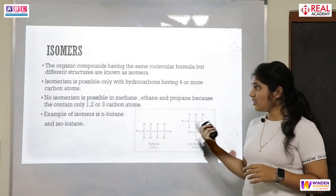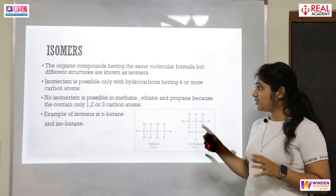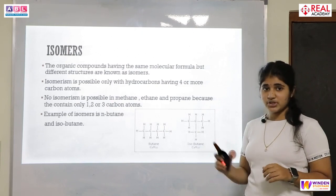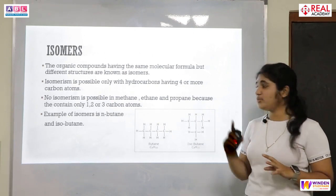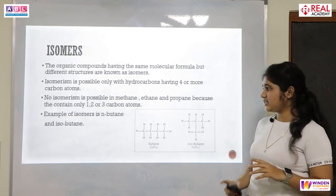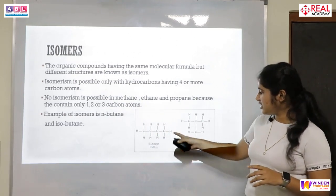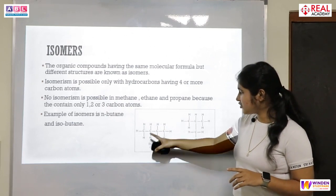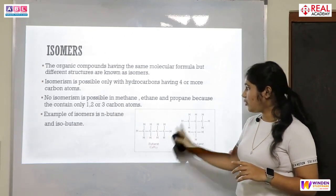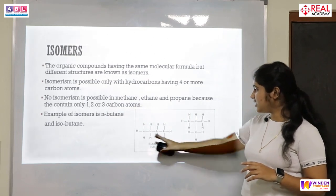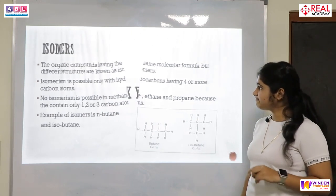Now let us move to the last topic for today — isomers. Organic compounds that have the same molecular formula but different structures are known as isomers. Isomers are possible only with hydrocarbons having four or more carbon atoms. No isomers are possible with methane, ethane, or propane, as they contain only one, two, or three carbon atoms. An example of isomers is butane and isobutane — butane has a straight chain while isobutane has a branched chain, but both have the same molecular formula with four carbon atoms. Thank you.